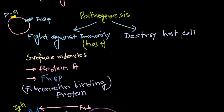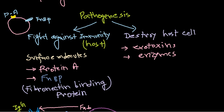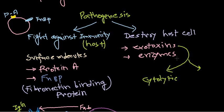The second major pathogenesis mechanism is destruction of the host cell, which is largely caused by exotoxins and by several types of enzymes. The exotoxins can be divided into two types: cytolytic toxins, which directly rupture the host cell, and immunotoxins, which manipulate the immune response.